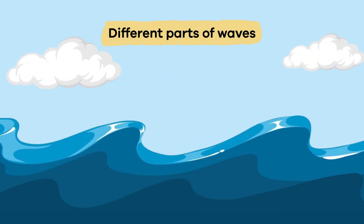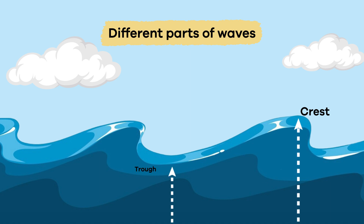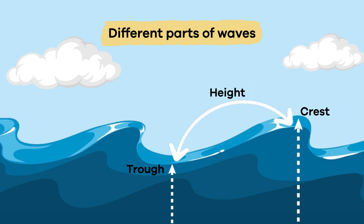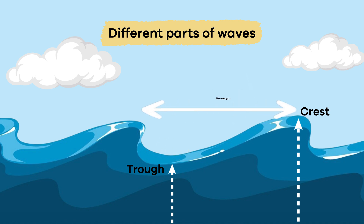Would you be surprised to learn that waves have different parts? The crest is the top of the wave, and the trough is the lowest part. The height of a wave is the distance from the trough to the crest. And the distance between two crests is called the wavelength.